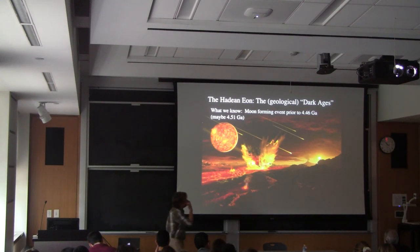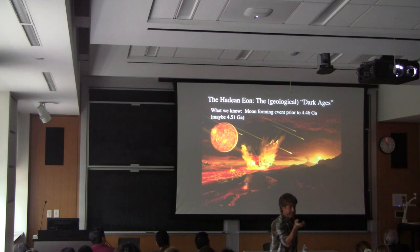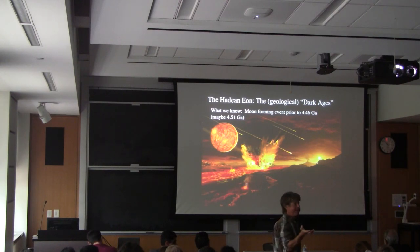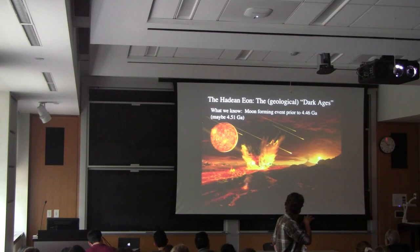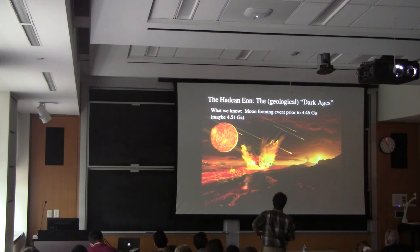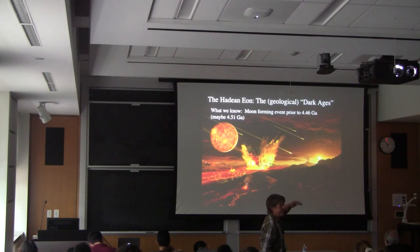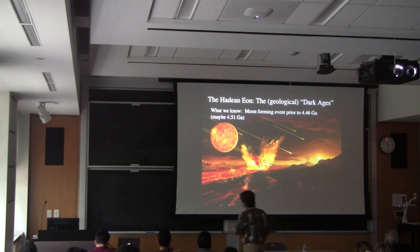We have a moon-forming event that has to be before 4.46 billion years ago. We get lunar anorthosites that date to 4.46 billion years old, so by that time — 100 million years after the initial formation of the solar system — we've got a moon and it's been around long enough that it's starting to crystallize a crust. There's independent evidence in your textbook that pins down the formation of the moon perhaps as early as 4.51 billion years, but certainly by 4.46 billion years.